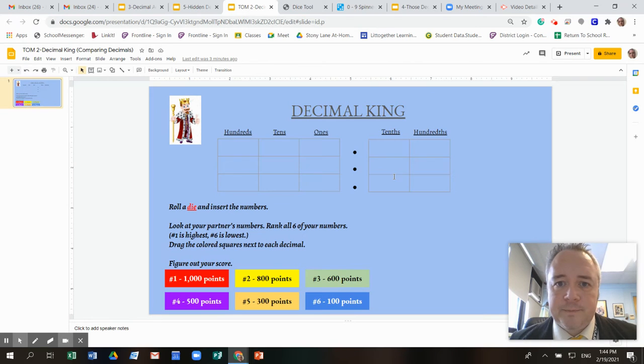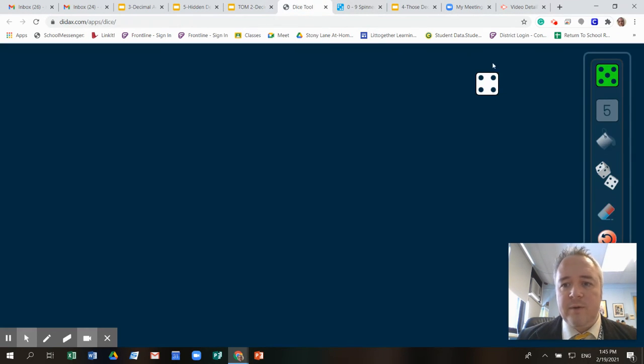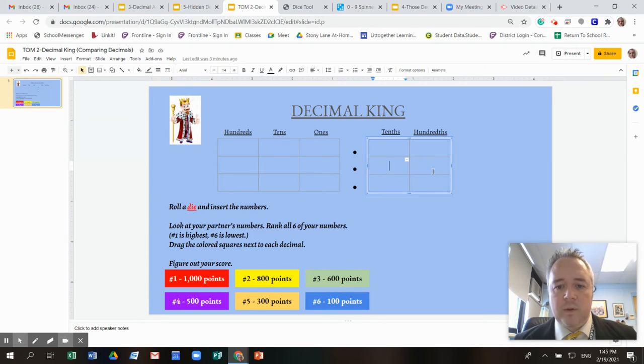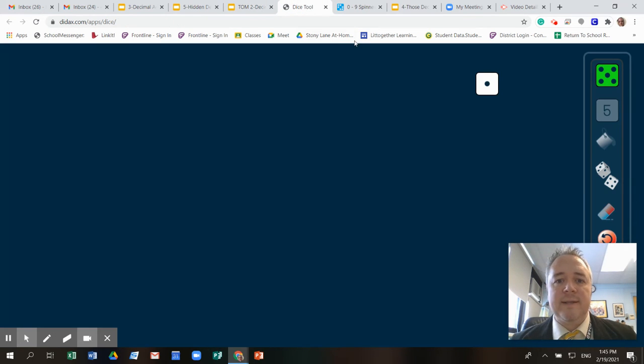So let's play this game. The way it goes is one player goes first. So I'm going to go first. I'm going to roll my die. I got a one. So I'm going to go to my game board and I'm going to put my one in any of these boxes. So I'm going to put it in this one right here in the tenth column.